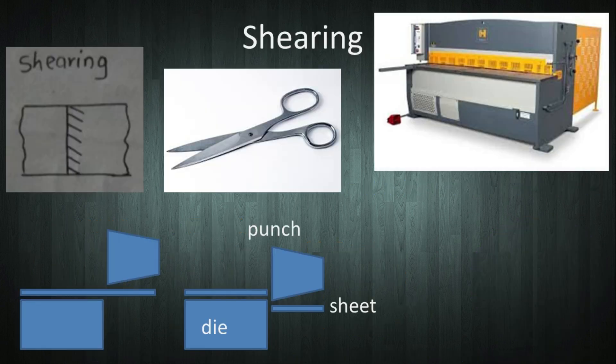The first operation is shearing. In shearing, sheet metal is cut to form an edge on workpiece. It is shown in the figure. To understand shearing, consider the example of scissors which cuts paper into pieces. In the slide, there is an industrial shearing machine shown.